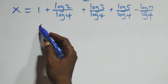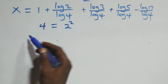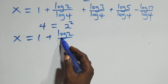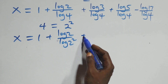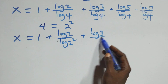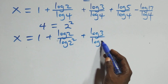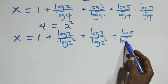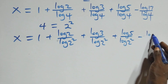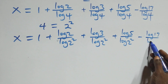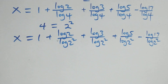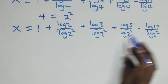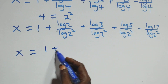Next step: 4 can be expressed as 2², so all the log 4 terms become log 2². Applying the power rule of logarithms, log(2²) = 2·log 2, so the 2 comes down. We now have x equals 1 plus log 2 over 2·log 2.